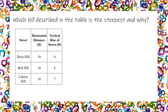Which hill, described in the table, is the steepest and why? Remember that steepness is the same as slope, and it is always described as rise over run — so it's vertical over horizontal.